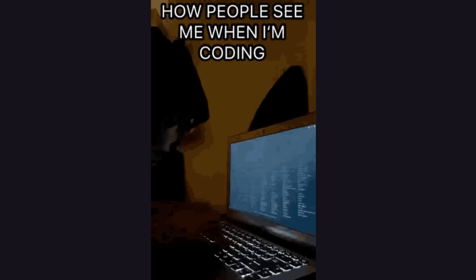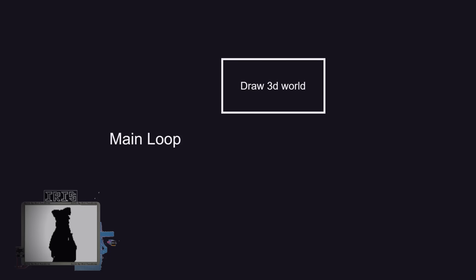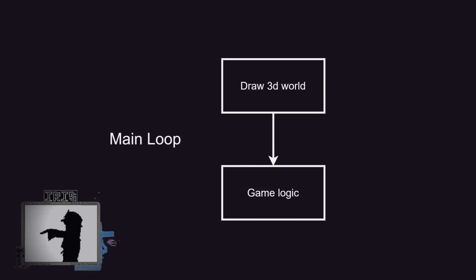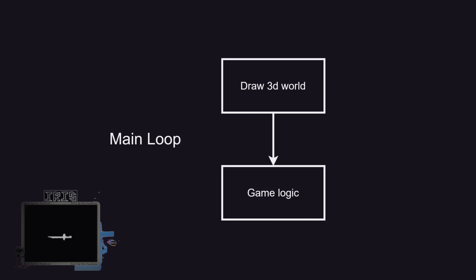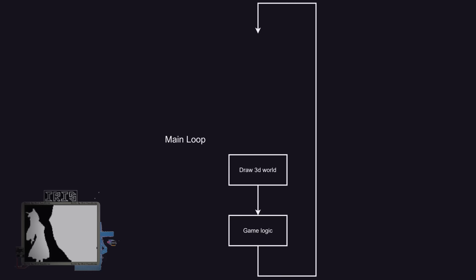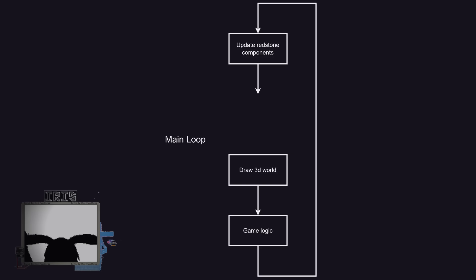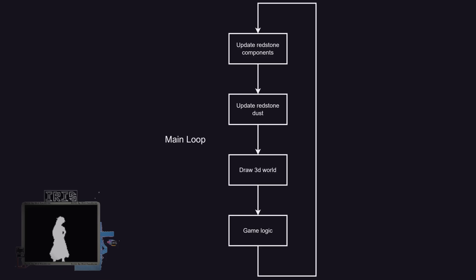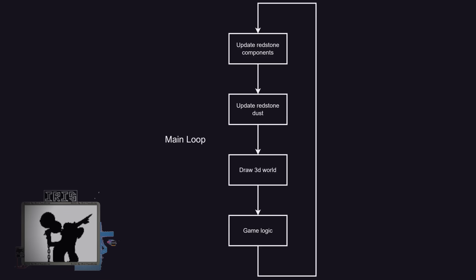The current Minecraft in Minecraft program is really simple. First we draw the 3D world made of cubes. Then we handle the game logic, which is player movement and placing or breaking blocks. And that is repeated again and again to run the game. To add redstone to this, a couple things need to be added. First we update the redstone components, which means updating everything except for redstone dust. Then we update the redstone dust, and the rest of the program is exactly the same as before.